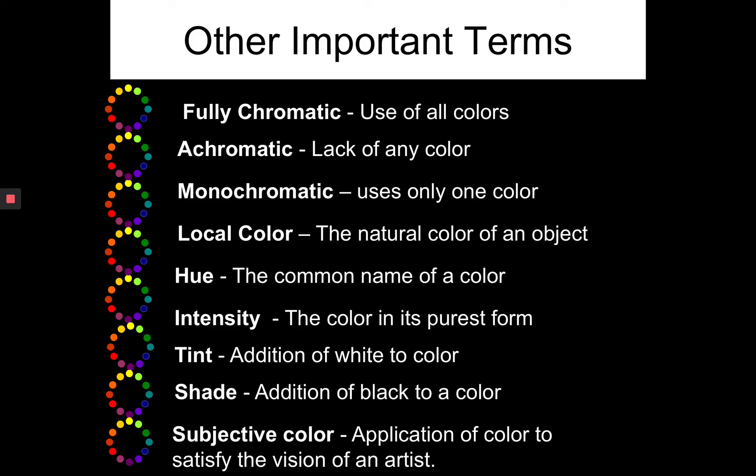Tint means adding white to the color, which means tinting it up and lightening it. Shade is the addition of black to a color, meaning darkening it, usually done with black or another color. Subjective color is color that is arbitrary and is used often to satisfy the vision of an artist, but doesn't relate to nature in any way.